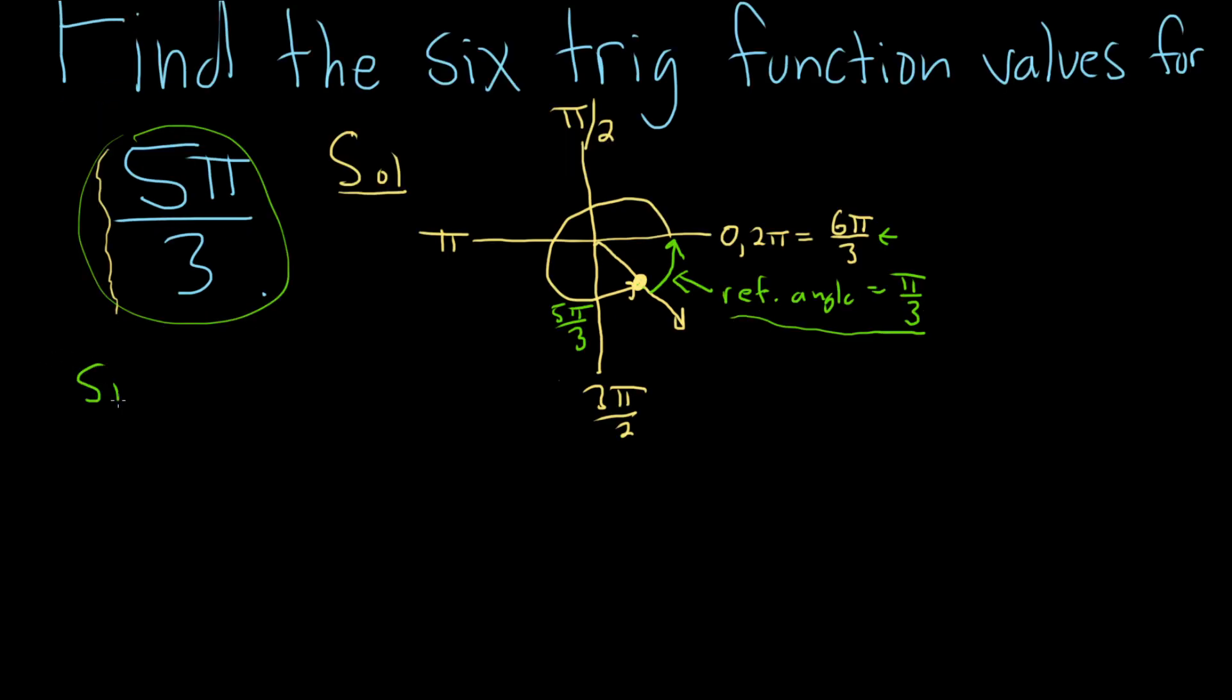So the sine of π/3, this is one that I've just memorized, is the square root of 3 over 2. This is a good method because it requires minimal memorization. You just memorize like two angles and you're good. The cosine of π/3, I know that's the other one, that's going to be 1/2. So from these two I can get the rest.